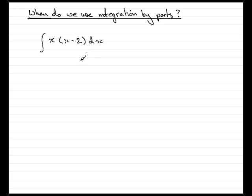But this is an example, unfortunately, that I wouldn't use integration by parts, even though we have two functions of x being multiplied together. Because to do this, I could actually multiply this bracket out and get x squared minus 2x, and it's very easy to integrate x squared and 2x.